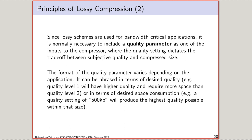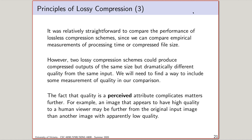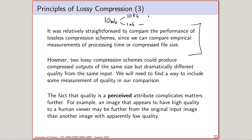We typically only use lossy schemes if what we're compressing ends up being consumed by a human — something they see or hear. That allows us to take advantage of well-known biases in the human sensory system. One thing we'll see in the next lecture is that human vision is very biased towards green, so if I keep green tones intact and reduce the resolution of reds and blues, humans are less likely to notice. This is scary from the perspective of measuring quality: before, we measured compression quality simply by file size. Now we have a tradeoff — one lossy compressor turns a 10-megabyte file into 10K and another into one megabyte. Which one was better? It depends — the smaller file doesn't necessarily mean better quality.